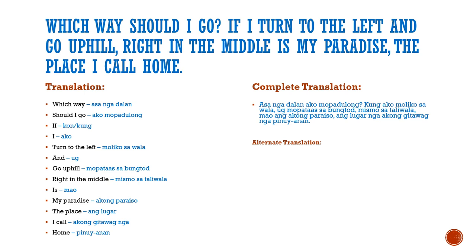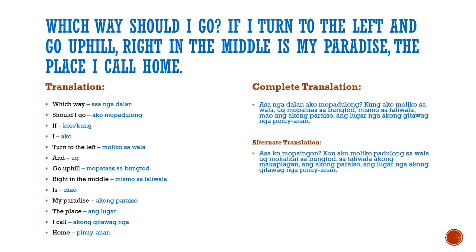This is the close literal translation of the phrase above. However, if you want to really convey a clearer translation, this would be how: asa ko mupaingun. Mupaingun is the same as mupadulong — you can interchange these two words.